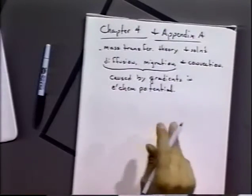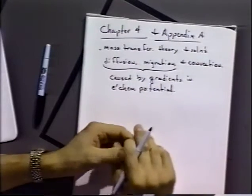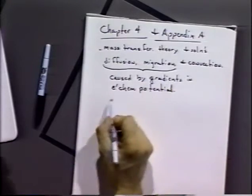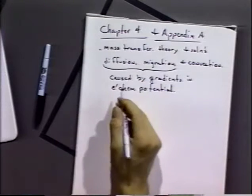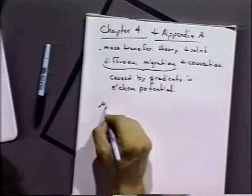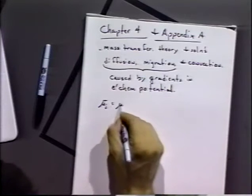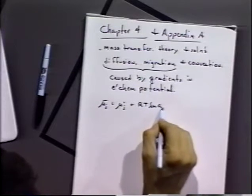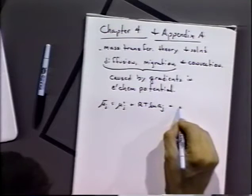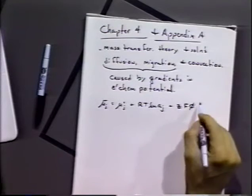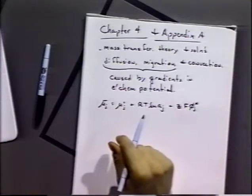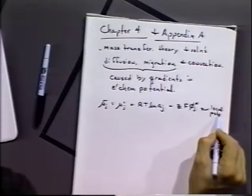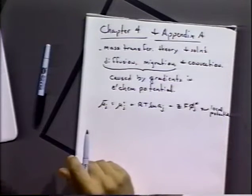Whenever we have these sorts of gradients, we'd expect a movement of ions in response to equalize that gradient in order to reach equilibrium. So let's think about electrochemical potential again. For species J, we can write the electrochemical potential for species J as equal to the standard potential of species J plus an activity term of species J plus an electrical term. This would basically be a local potential — what the potential is where that ion or molecule J is located.